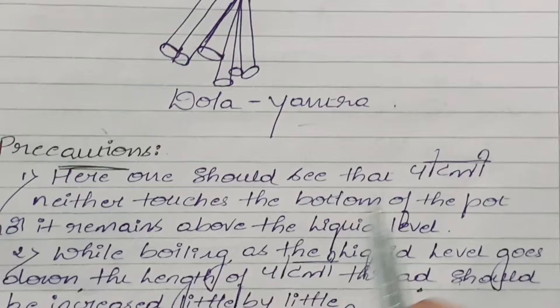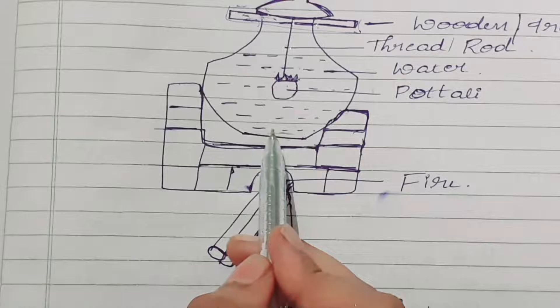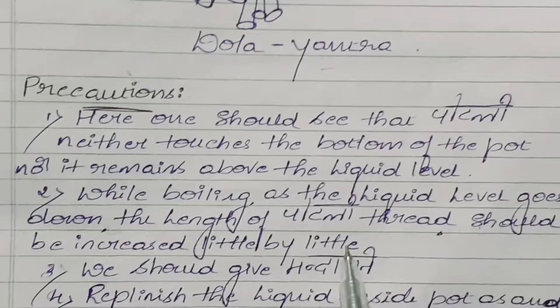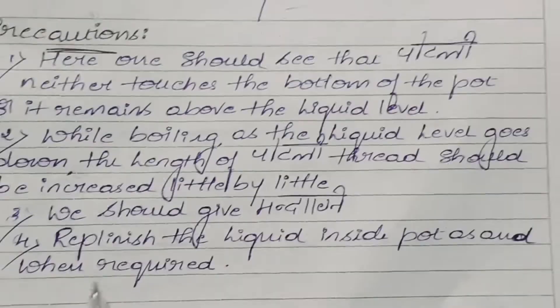While constructing Dola Yantra, one should see that the potli neither touches the bottom of the pot nor remains above the liquid level. While boiling, as the liquid level goes down, the length of the thread should be increased little by little.